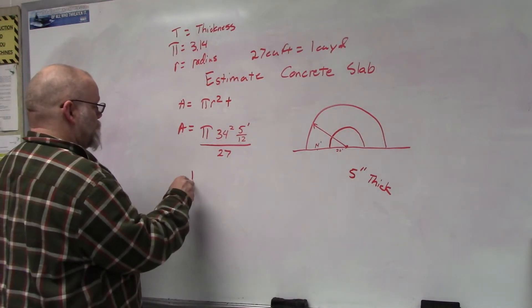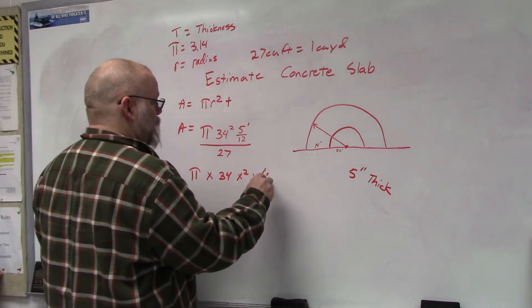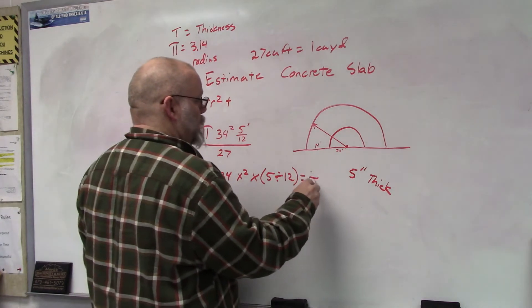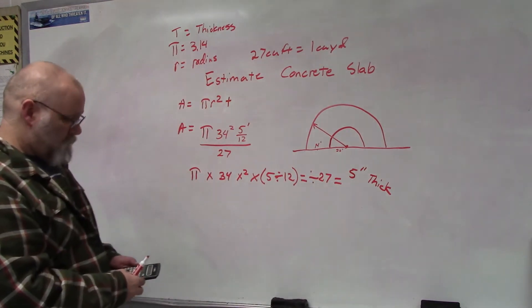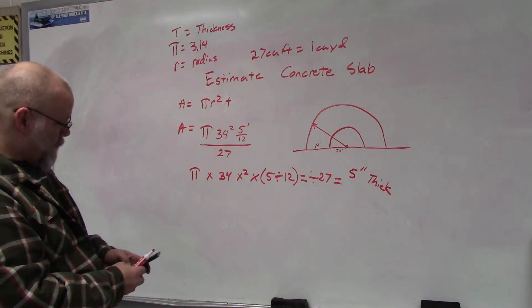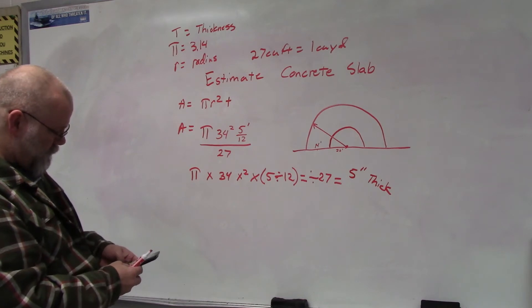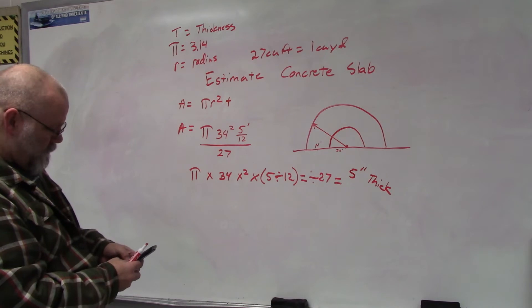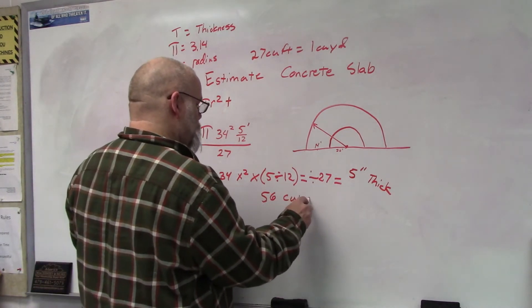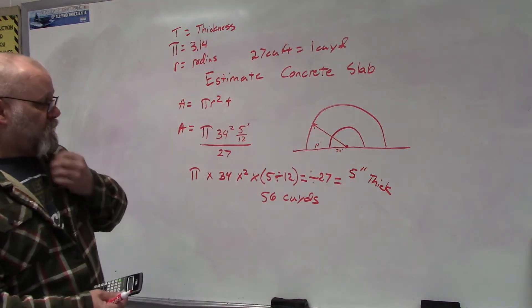In your calculator you would enter π × 34² × (5÷12) ÷ 27. So that's π × 34 squared × parentheses 5 divided by 12, close parentheses, equals, divided by 27, equals. And I get 56 cubic yards. So if I did the whole circle, it would be 56 cubic yards.